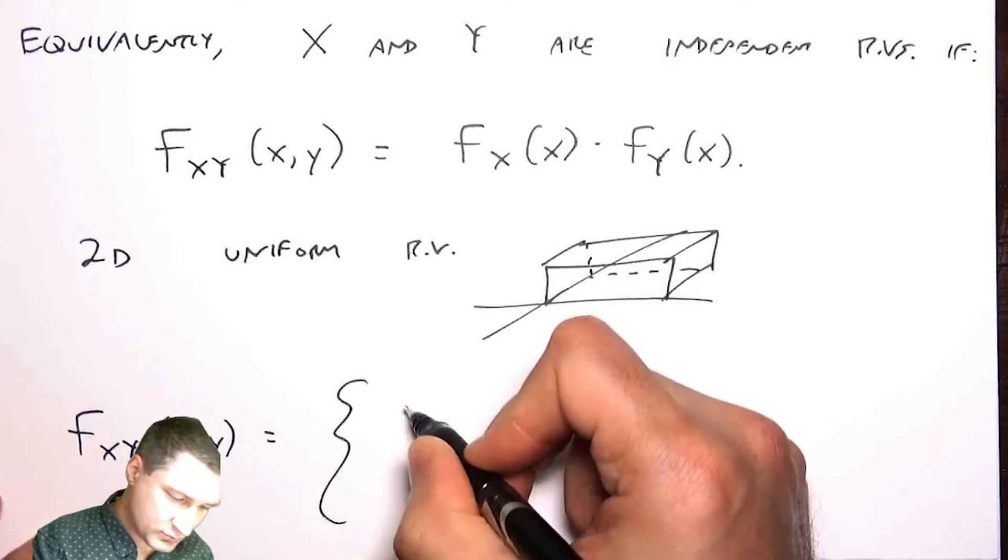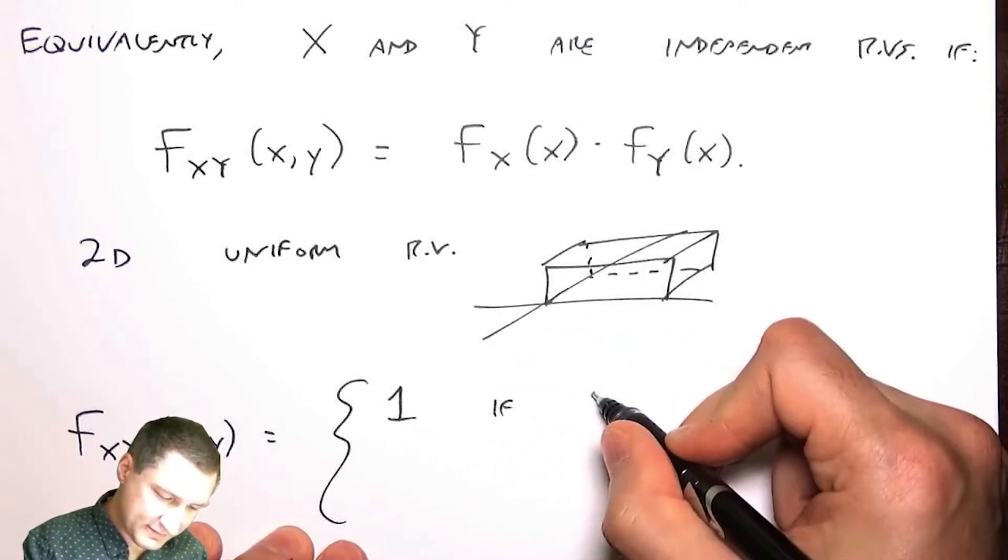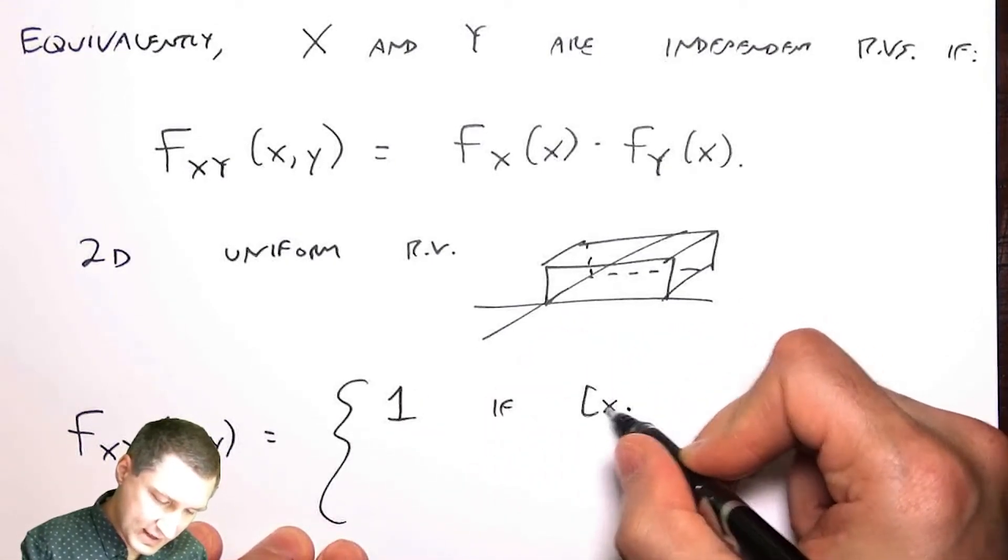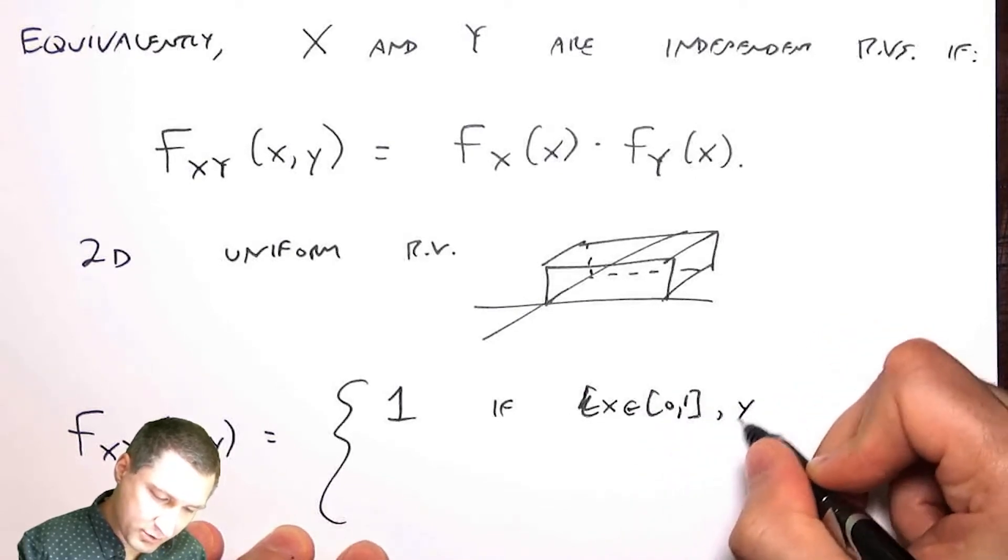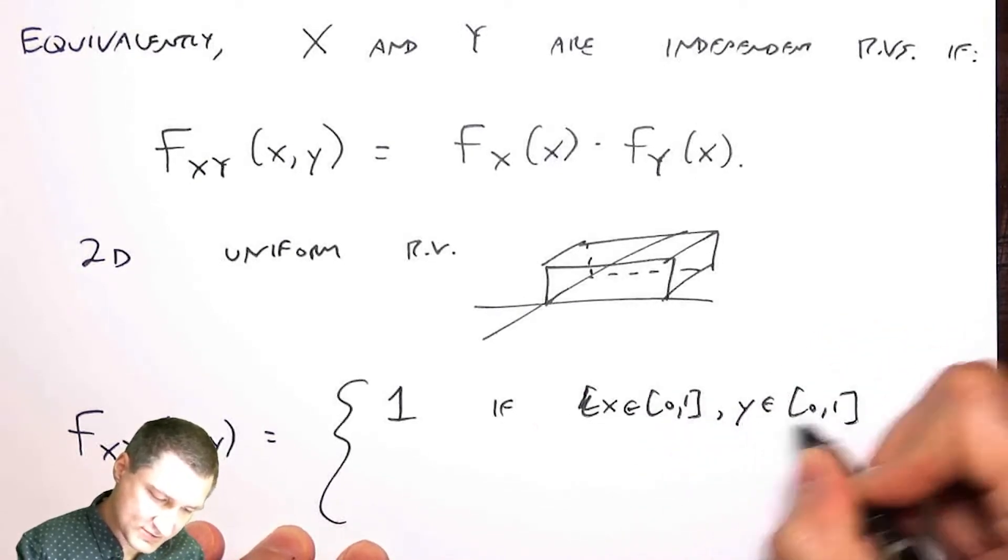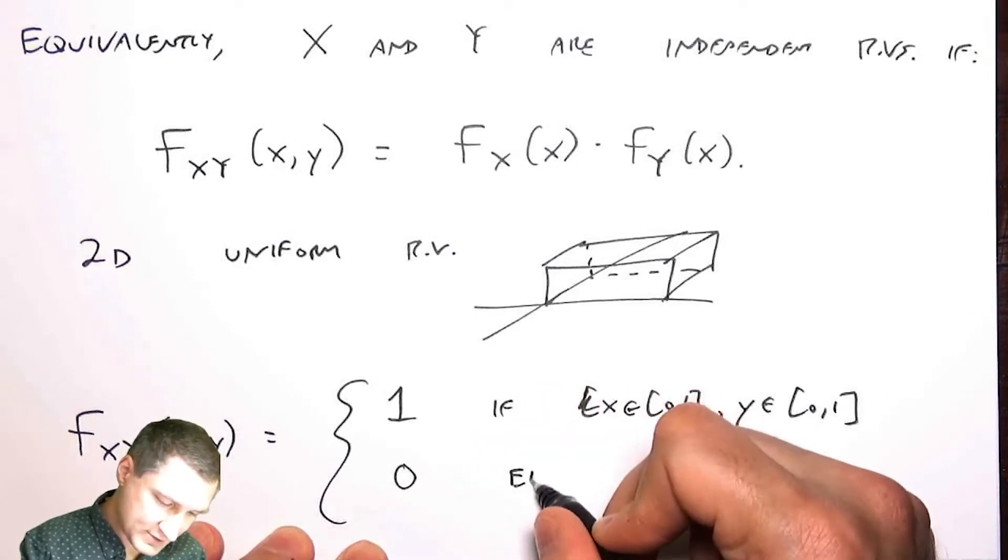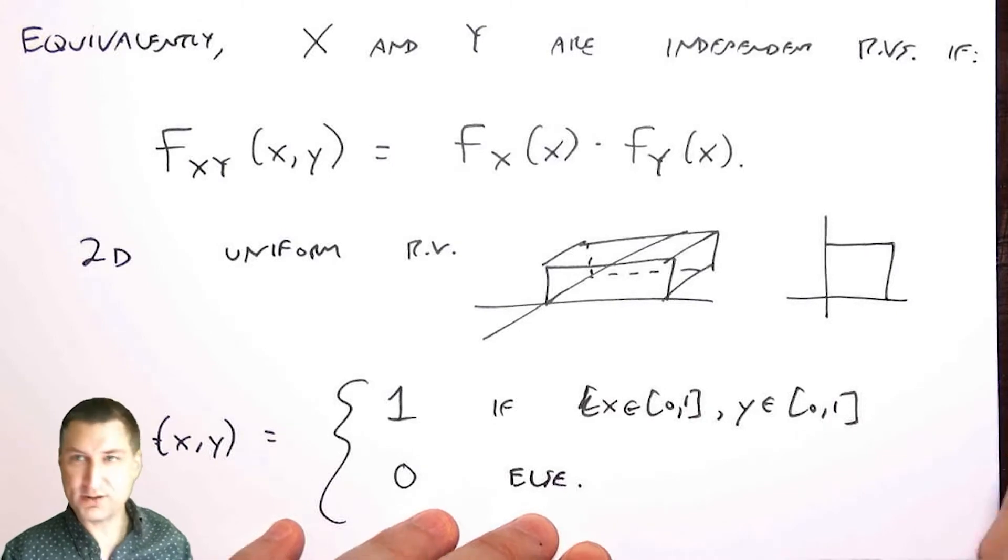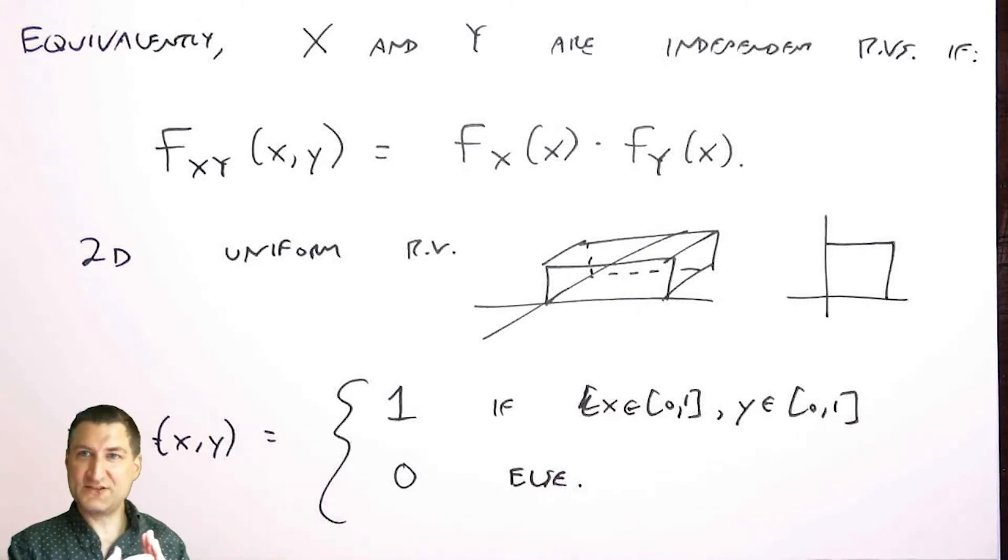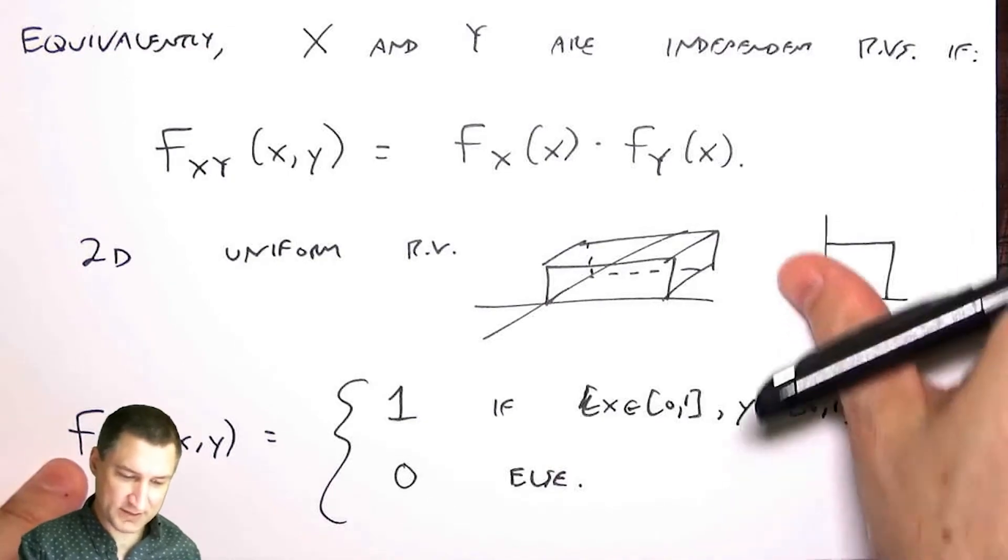is equal to 1 if X and Y are both inside this 0,1 square and 0 otherwise. That's just like from the top. I have this square like this, and I can see that this is just the product of a uniform random variable in X times uniform random variable in Y. So I can see that